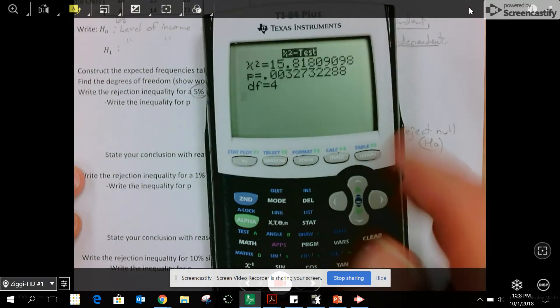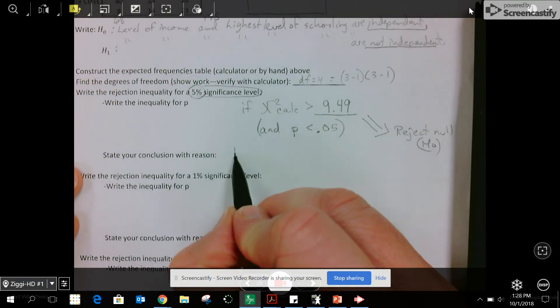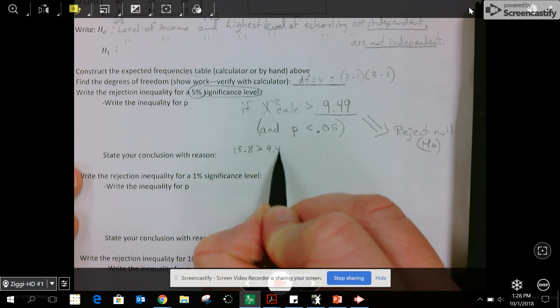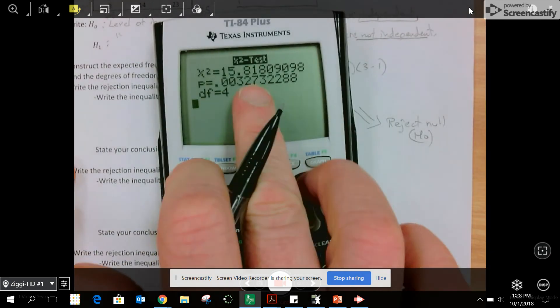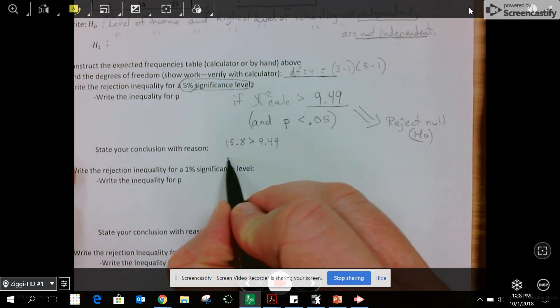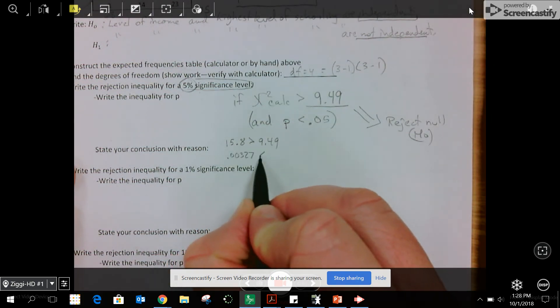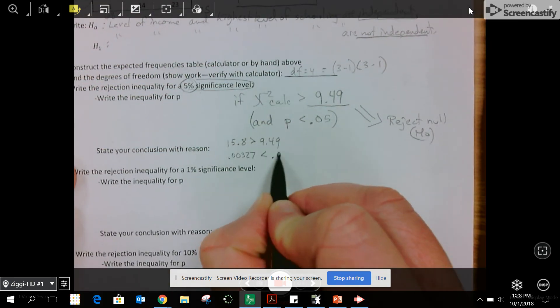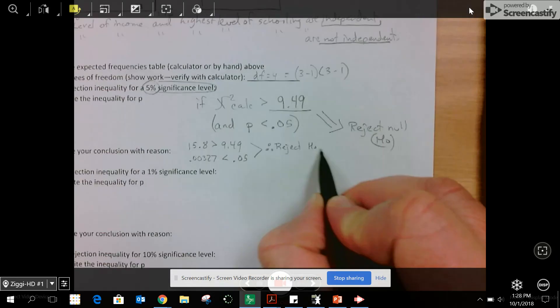That is less than 0.05, so both of these lead us to say that because this is true, our conclusion is reject H0 and we accept H1. The reason it always asks for a reason: the reason is because the chi-squared calculated is greater than the chi-squared from the table.